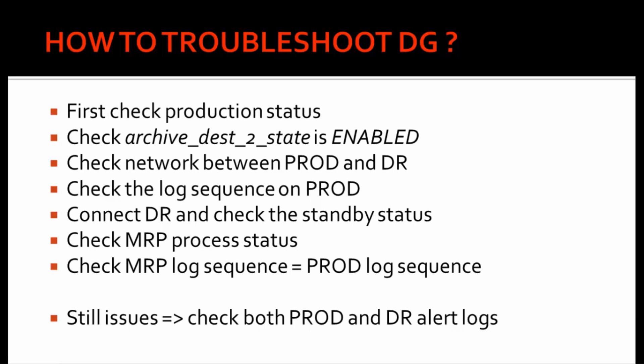Next, we need to check the network between the production and the DR. We need to perform a TNS ping. We also need to check the log sequence on the production, because we have to match this log sequence with the DR server.